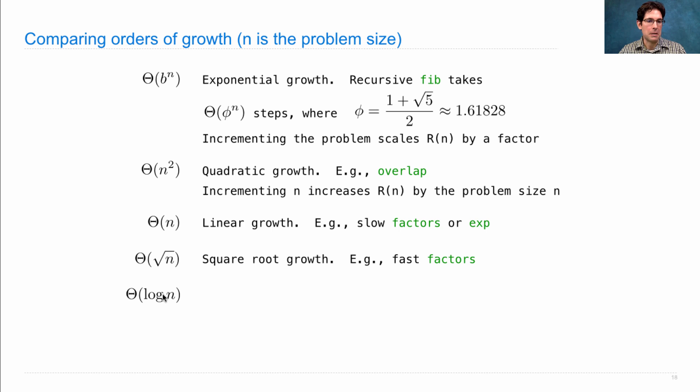Theta log n for any base of the logarithm is called logarithmic growth. The fast version of exp did this, and it means that doubling the problem size only increments the resources used. So these are very efficient because you can have a huge problem and you get a doubly huge problem, you only have to do kind of increment more work.